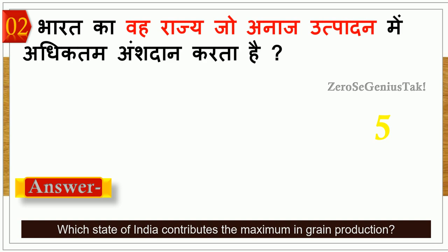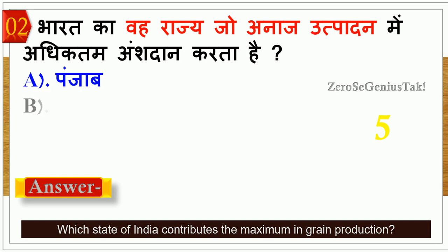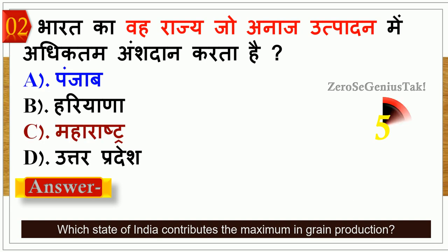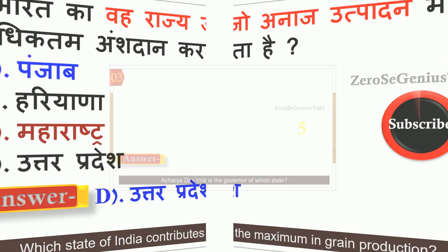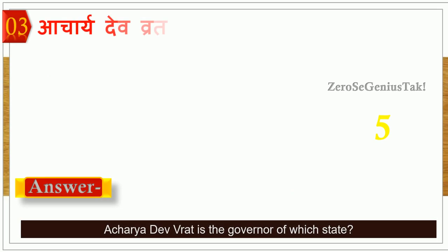The first question is about which state is the most important. The correct answer is option D — Uttar Pradesh.